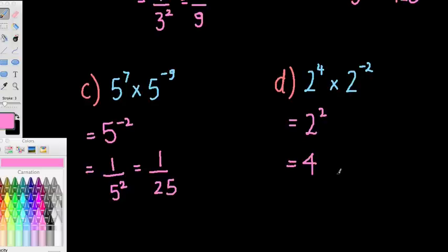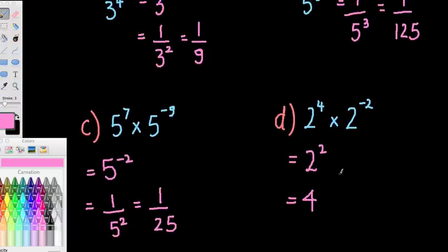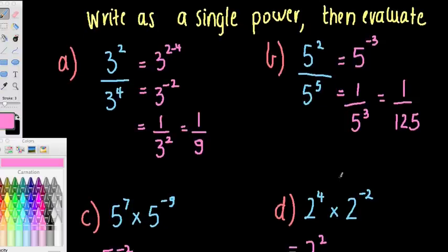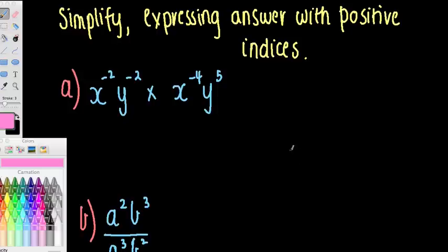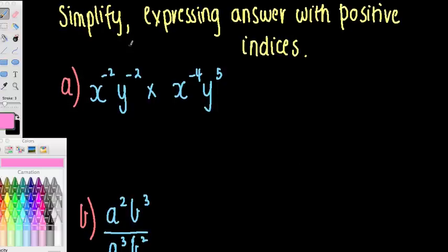Pause where you wish so that you can get these examples into your book for further reference. I've got one more slide to go through — just a couple of trickier ones. Simplify, expressing the answer with positive indices. That's generally the conventional way to go, and that's what we'll do a lot in this topic.